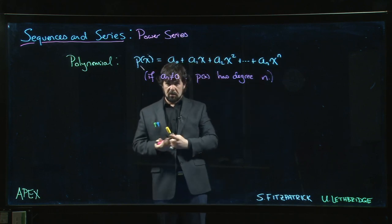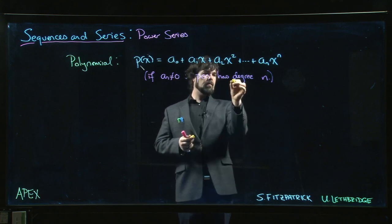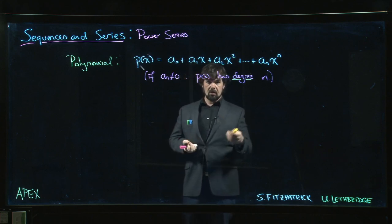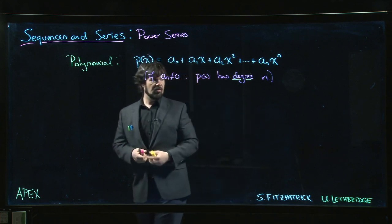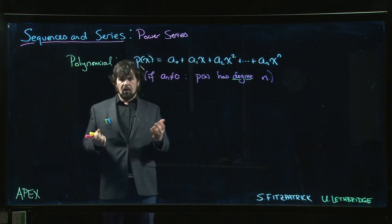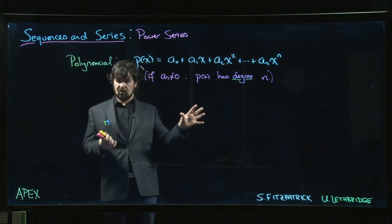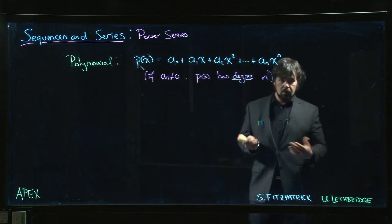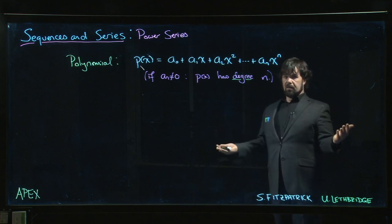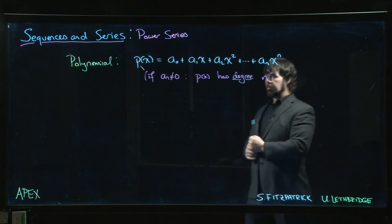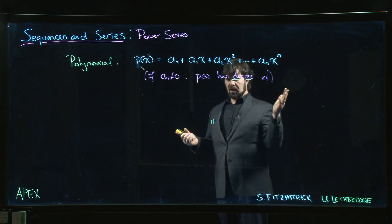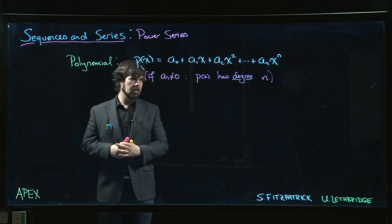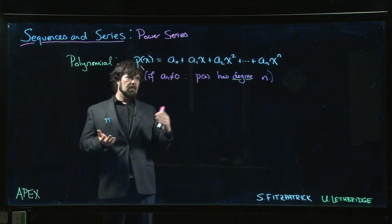We've looked at polynomials before — we deal with them quite a bit. They're standard examples when starting out with limits, derivatives, and integrals because they're easy functions to work with. Among all the functions you encounter in a calculus course, polynomials are the simplest. They're defined everywhere, continuous everywhere, differentiable everywhere, and we just need power rule, constant multiple rule, and sum rule to handle derivatives and integrals.